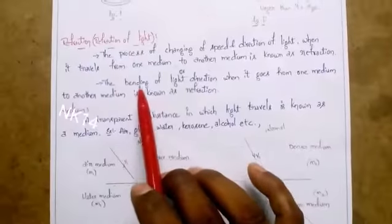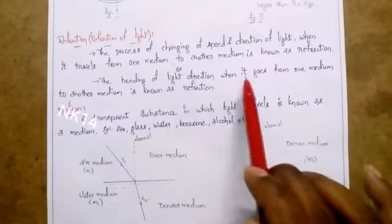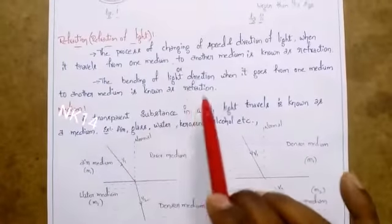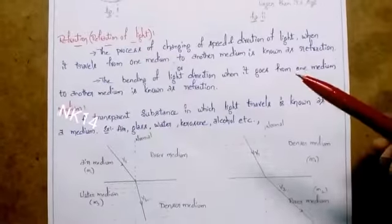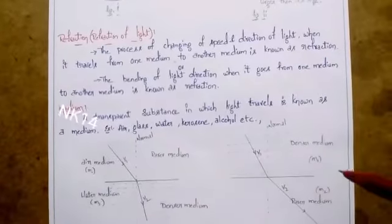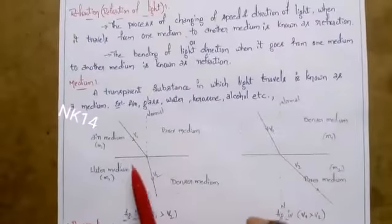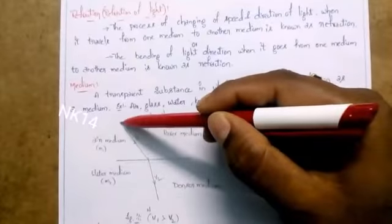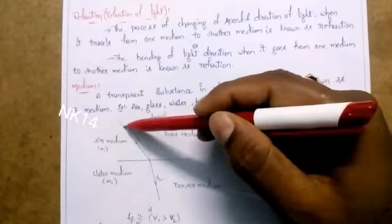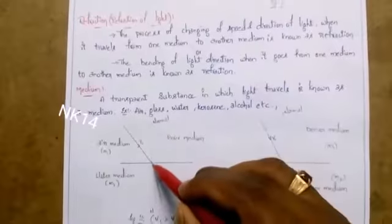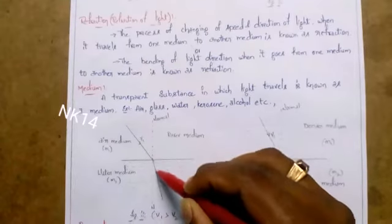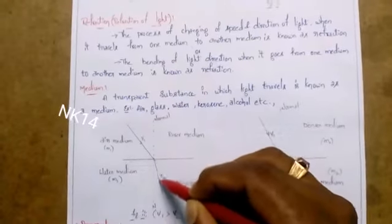One more definition: the bending of light direction when it goes from one medium to another medium is known as refraction. Whenever the light goes from one medium to another medium, it starts bending its angle. For example, suppose the light is transferring from air to water. Actually, the light has to travel in a straight line path, but due to refraction, it is changing its direction. This is the property of refraction.